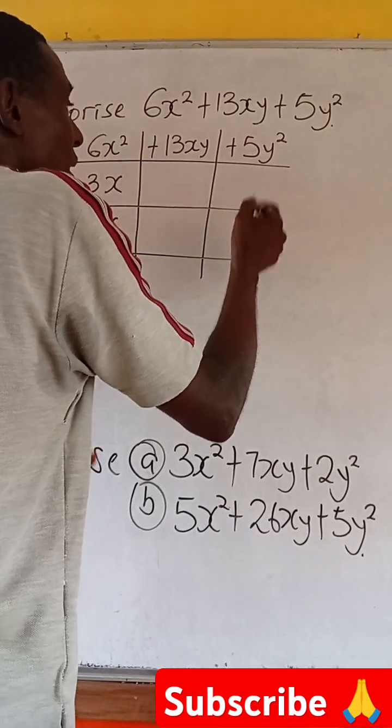2 factors of 5, that's 1 and 5. But now, here we started with the bigger factor, so here we are going to start with the small factor. So we say 5 and 1, so it will now be y and plus y.